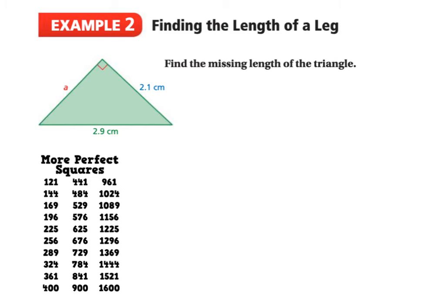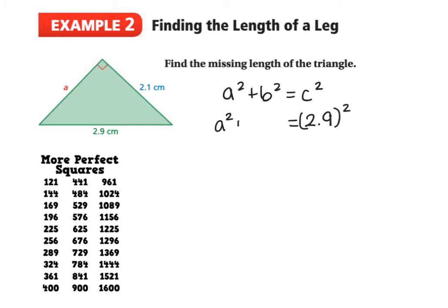Taking a look at example two, we want to find the length of a leg. Looking at the triangle, the unknown side is next to the right angle, and the side directly across from the right angle — 2.9 — is the hypotenuse. First step: write the formula, a squared plus b squared is equal to c squared. I'll substitute the hypotenuse first: instead of c I'll put 2.9, so 2.9 squared. Then a stays as a squared, plus b squared which is 2.1 squared.